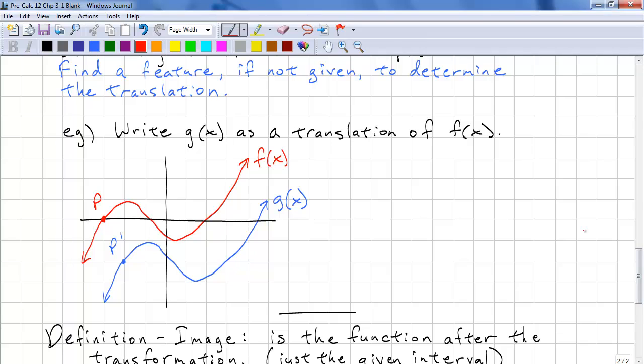If you're not given points, you need to find a feature to determine the translation. Here's an example. We are given points, so we don't need to determine the feature. If we weren't given p, we could use the peaks or the valleys as the feature.